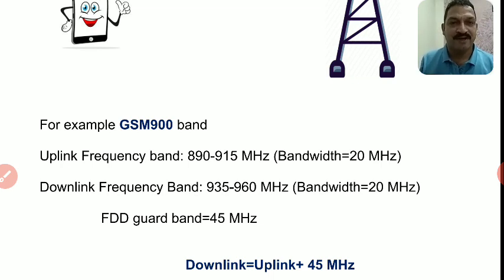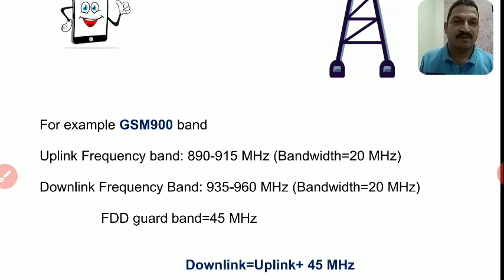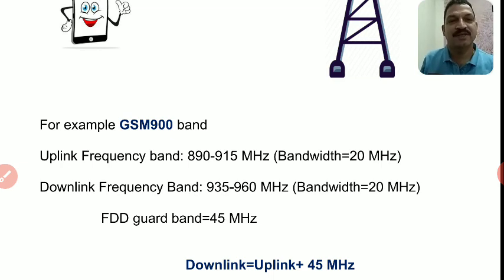For example एक band का use करके समझते हैं — GSM 900 band। GSM एक Cellular Communication Technology है जो 2G technology है, जिसका full form है Global System for Mobile। इसके अलावा एक technology 2G में use की गई थी — CDMA technology, Code Division Multiple Access। तो GSM 900 band में example के तौर पर समझें तो इसमें uplink frequency 890 MHz से 915 MHz है, जिसकी bandwidth 25 MHz है।